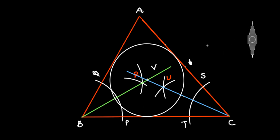In this way we have constructed the incircle. This is our incircle which touches all the sides AB, BC, and CA. This is how to construct the incircle in a triangle.